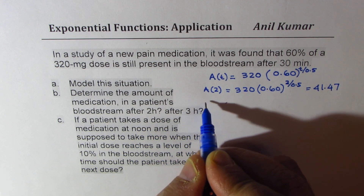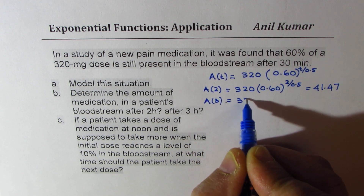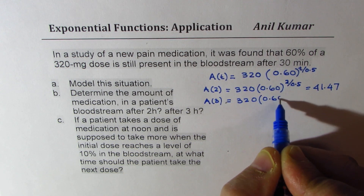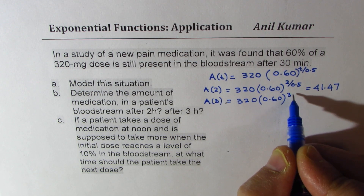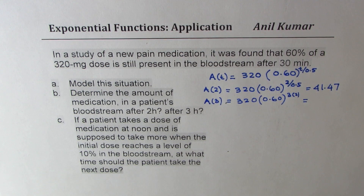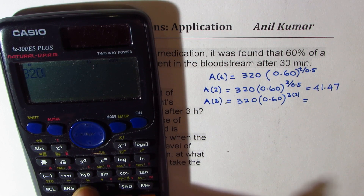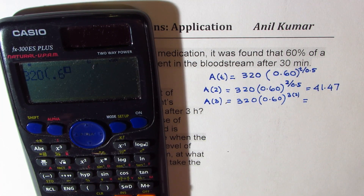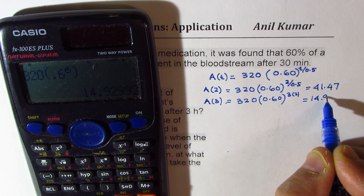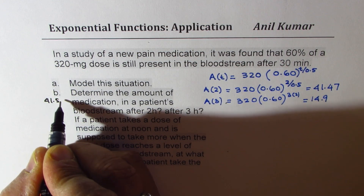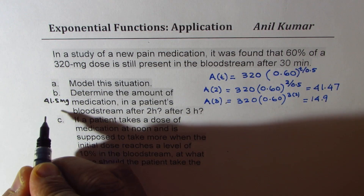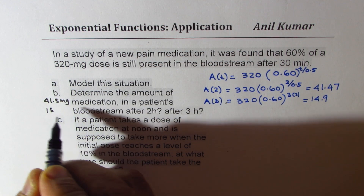Now let's calculate after 3 hours. After 3 hours, it will be 320 times 0.60. Since dividing by 0.5 is the same as multiplying by 2, I will write this as 3 times 2, which is 6. So 320 times 0.6 to the power of 6 equals approximately 14.9. So after 2 hours it is 41.5 milligrams, and after 3 hours it is around 15 milligrams.